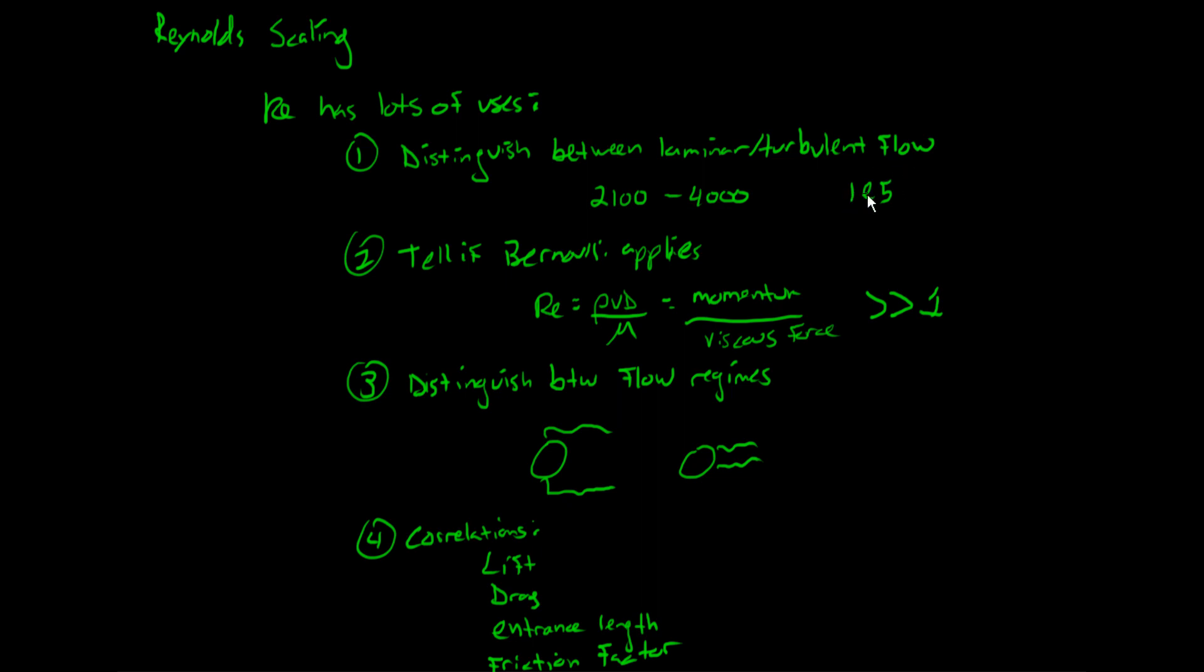Number two, we use it to see if Bernoulli applies. So if the Reynolds number is huge, that means the viscous forces are small relative to the momentum or the inertia of the flow, and that means you can more or less assume it's inviscid. So huge Reynolds numbers, Bernoulli is pretty good.